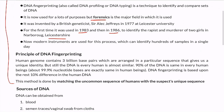Regarding the principle: DNA Fingerprinting works by matching the uncommon sequences of a human with a suspect's unique sequence. The human genome has approximately 3 billion base pairs arranged in a particular sequence that gives each person a unique identity. Although the human body has 3 billion base pairs, about 90% of DNA is similar across humans. It is the remaining 10% that is different, and DNA Fingerprinting studies and matches this unique 10% with the suspect.